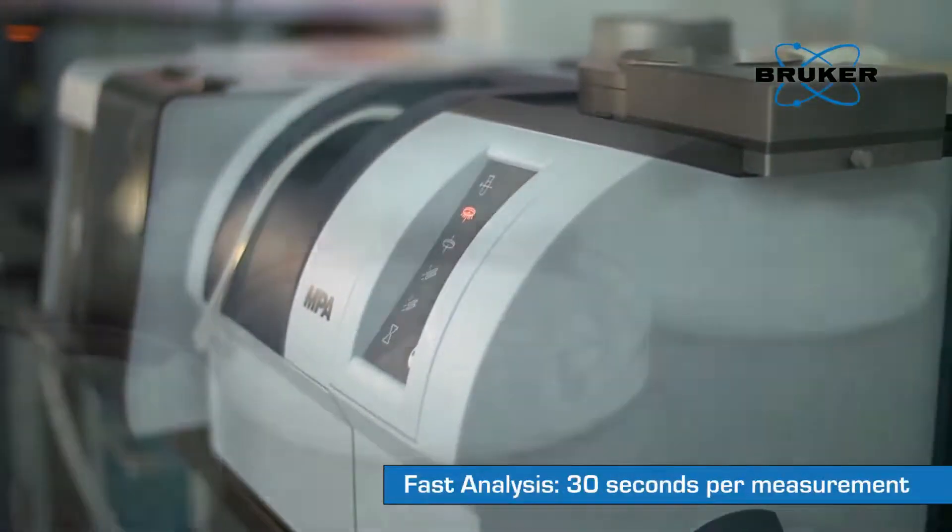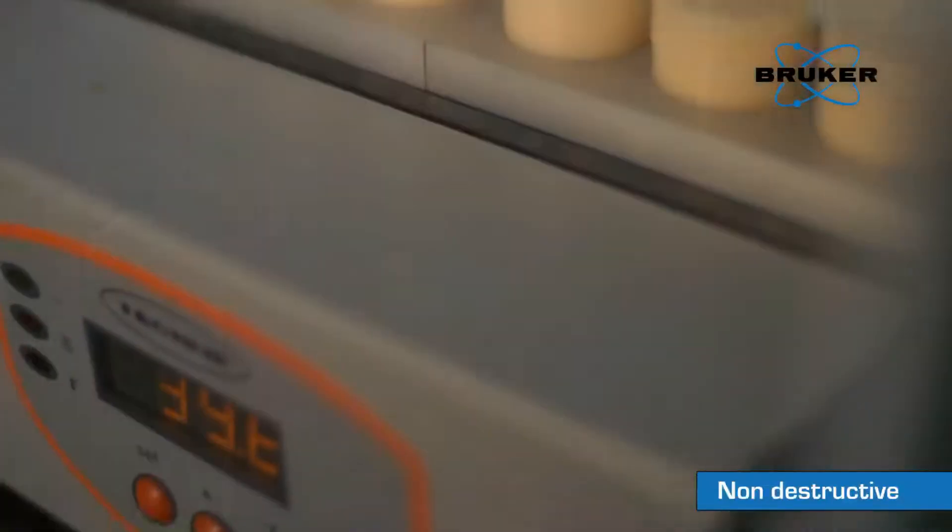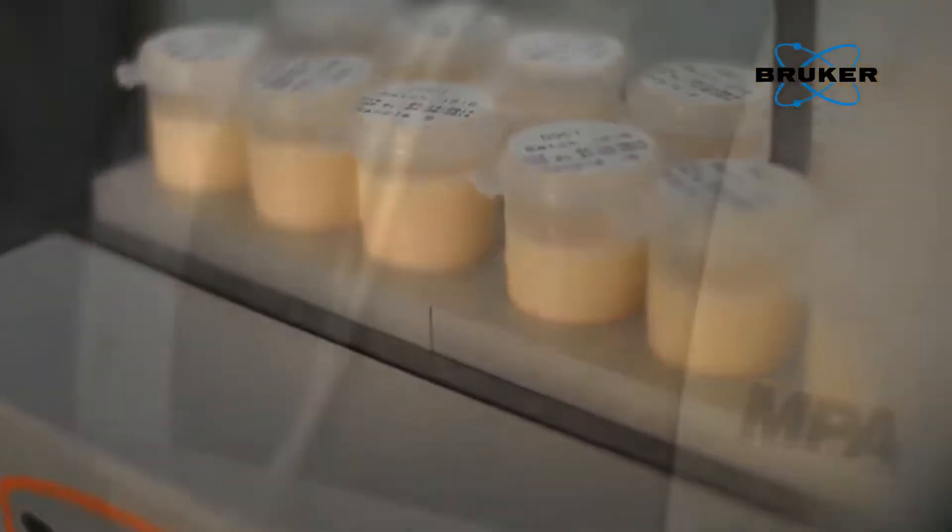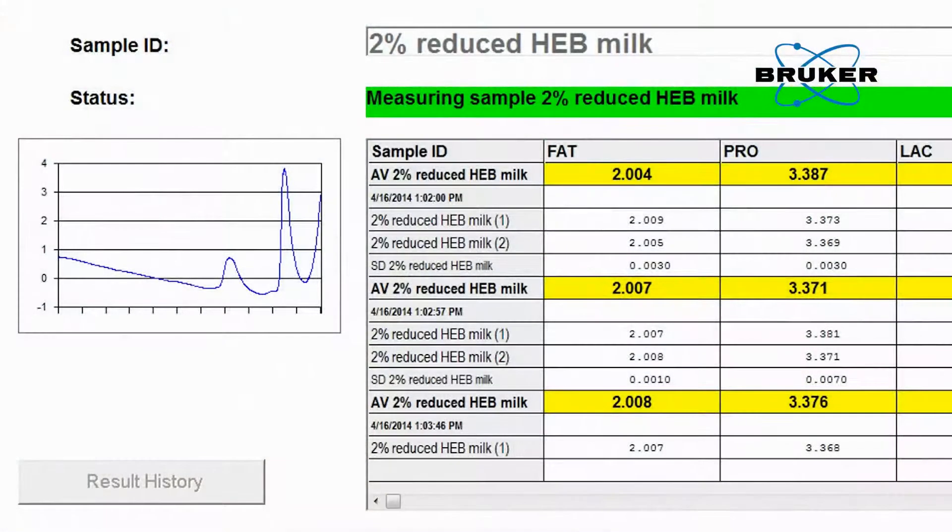The Bruker MPA Dairy System is configured to test the full range of dairy products, providing simplified routine testing without the need to cross-train on multiple instruments, faster ROI with minimal risk, and actionable data from start to finish to support lean manufacturing and Six Sigma initiatives.